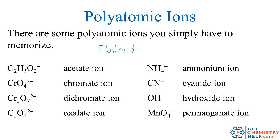So if you have to memorize these, go ahead and just put C2H3O2 negative on the front and acetate on the back, CRO2 negative on the front and chromate on the back, and just memorize them. But fortunately there are many others that I can show you patterns and rules for, so you can name dozens of other polyatomics without having to flat out memorize them.